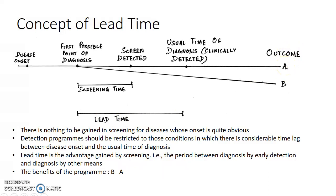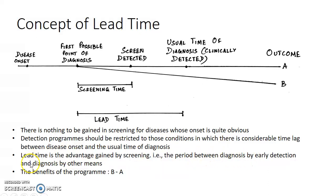The time between diagnosis using screening tests and the point of usual diagnosis by clinical methods is called lead time. Outcome A denotes the outcome of the disease without screening; Outcome B denotes the outcome with screening. There is nothing to be gained in screening for diseases whose onset is quite obvious, as the first possible point of diagnosis and the usual time of diagnosis by clinical methods are very close. Detection programs should be restricted to conditions with considerable time lag between disease onset and usual diagnosis. Lead time is the advantage gained by screening — the period between diagnosis by early detection and diagnosis by other means. The benefits of the program can be given by B minus A.